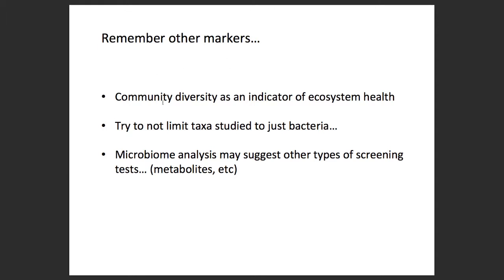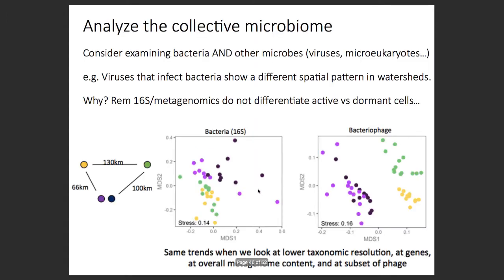I'm not a big fan of community diversity alone as a marker, but I am a big believer in not limiting taxa to just bacteria — looking at metabolites and gene-based analyses. Here's that same watershed study looking at bacteria 16S data and bacteriophage data. It was really striking how much the bacteria were not location-specific — well-known that water in far parts of Canada has the same taxa in different locations — but the bacteriophage were really quite distinct, showing clear geographical differences between sites.